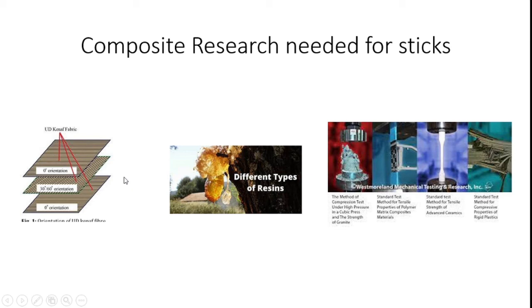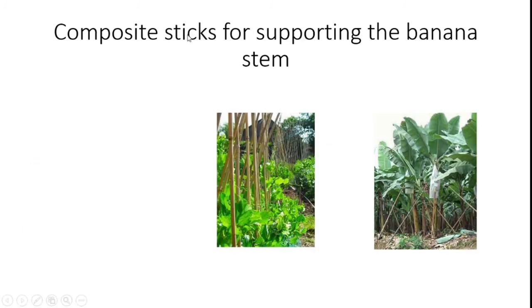We can improve the mechanical properties of composite materials by improving fiber orientation and incorporating different resins. By conducting different research, we can finally develop different sticks for supporting banana stems.